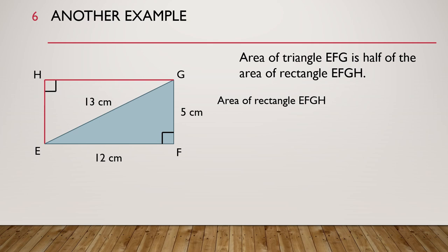So the area of rectangle EFGH is the length times the breadth, and that is equal to 12 cm times 5 cm. Then the area of triangle EFG would be equal to half of the area of rectangle EFGH. So that is equal to half times 12 cm times 5 cm, and we get 30 cm² as the answer.